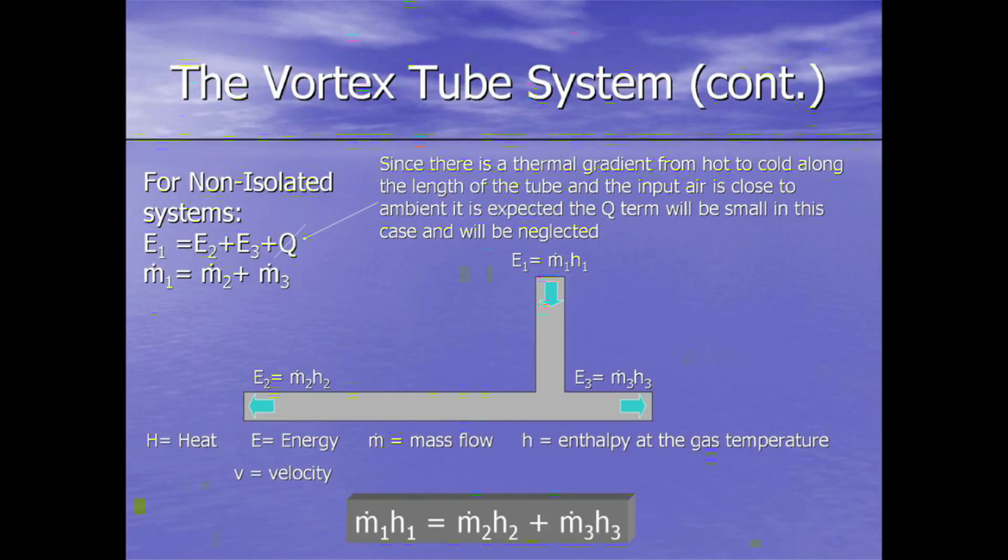And so what we end up with, as you notice at the bottom of the slide, is ṁ₁h₁ equals ṁ₂h₂ plus ṁ₃h₃. And this is what we hope to prove with our testing.